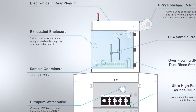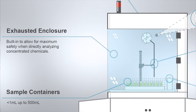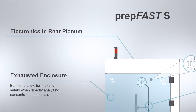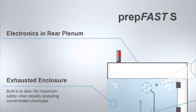It starts with an enclosed and exhausted auto-sampler deck with optional purge gas to minimize the potential of sample contamination while awaiting analysis, even when not placed in a clean room. All the electronics for the auto-sampler are located in a separated rear plenum.